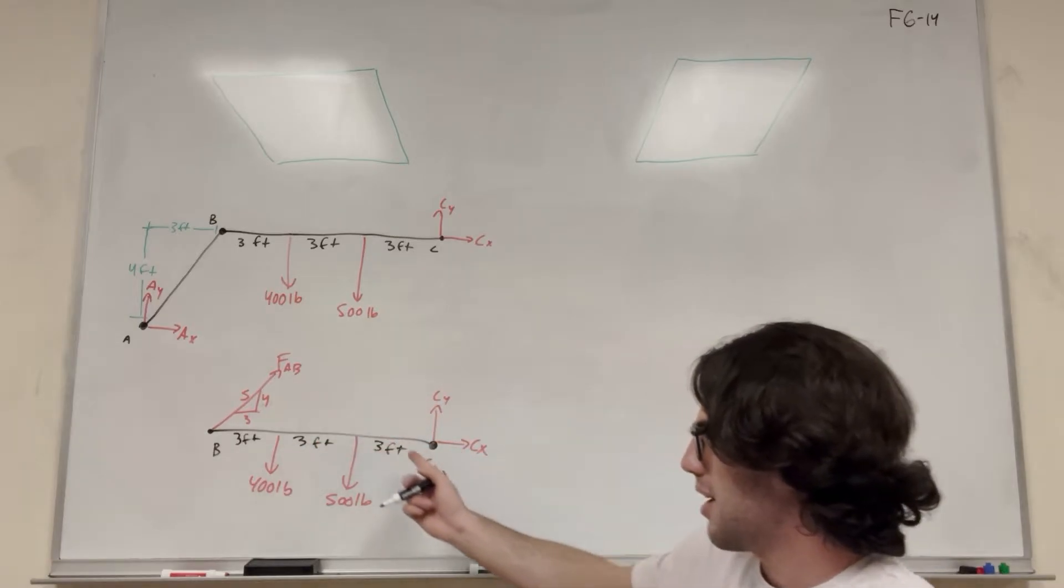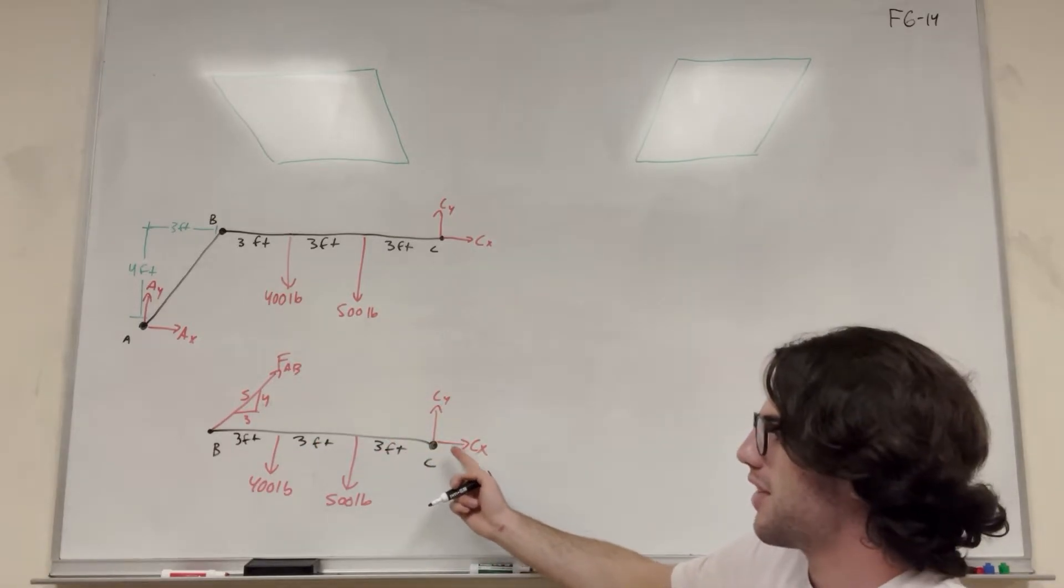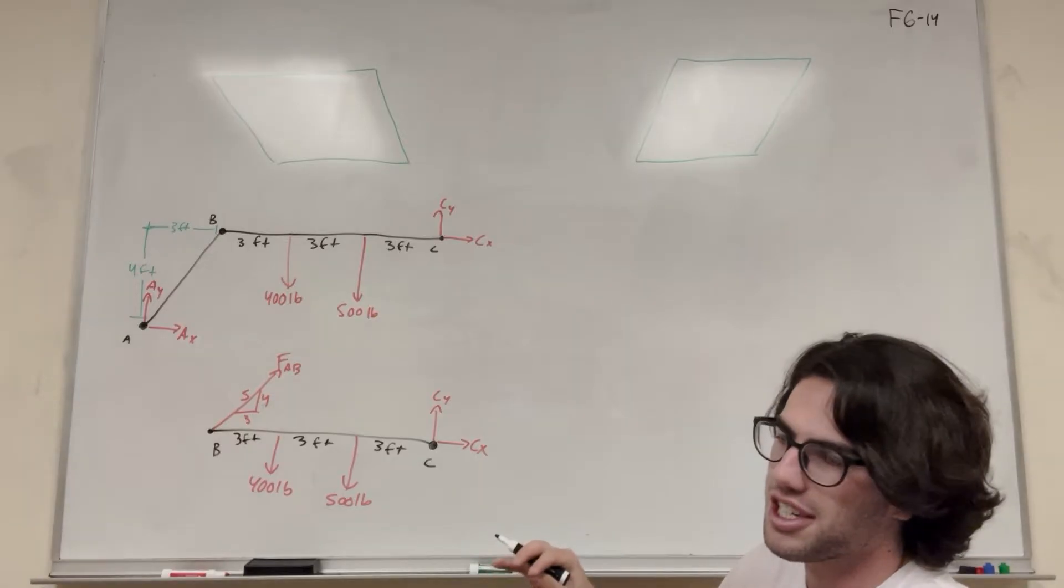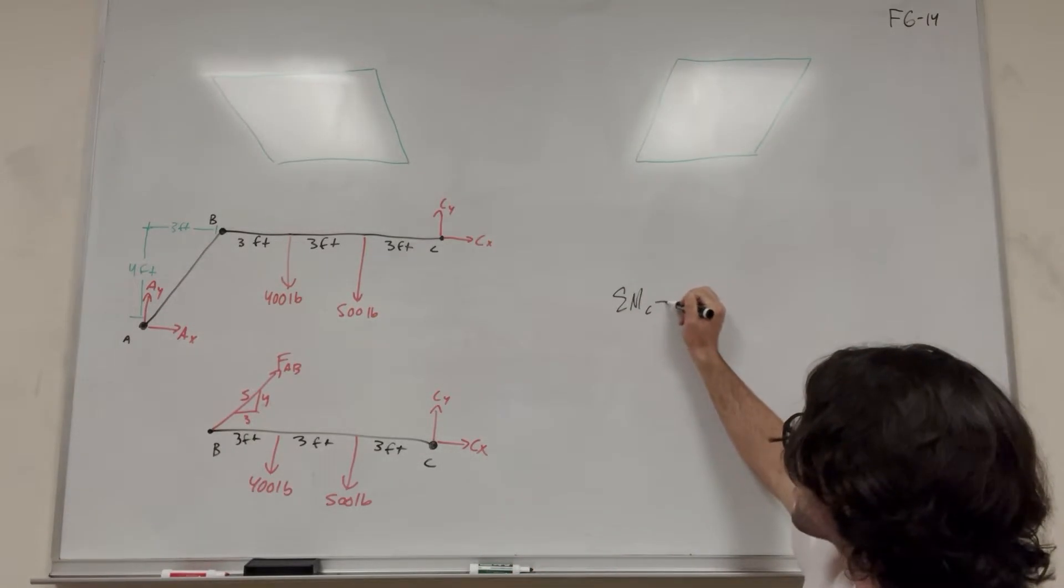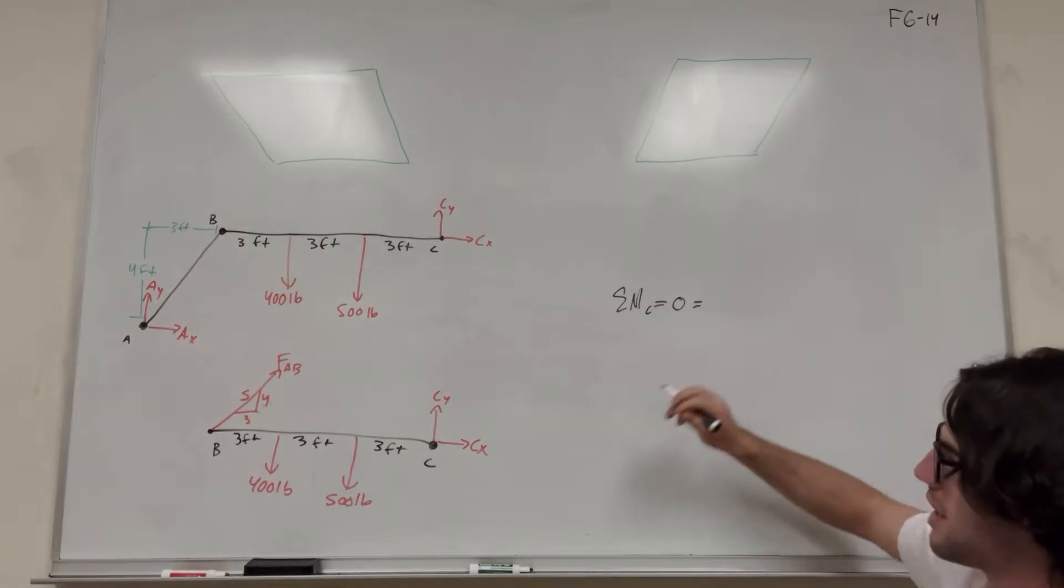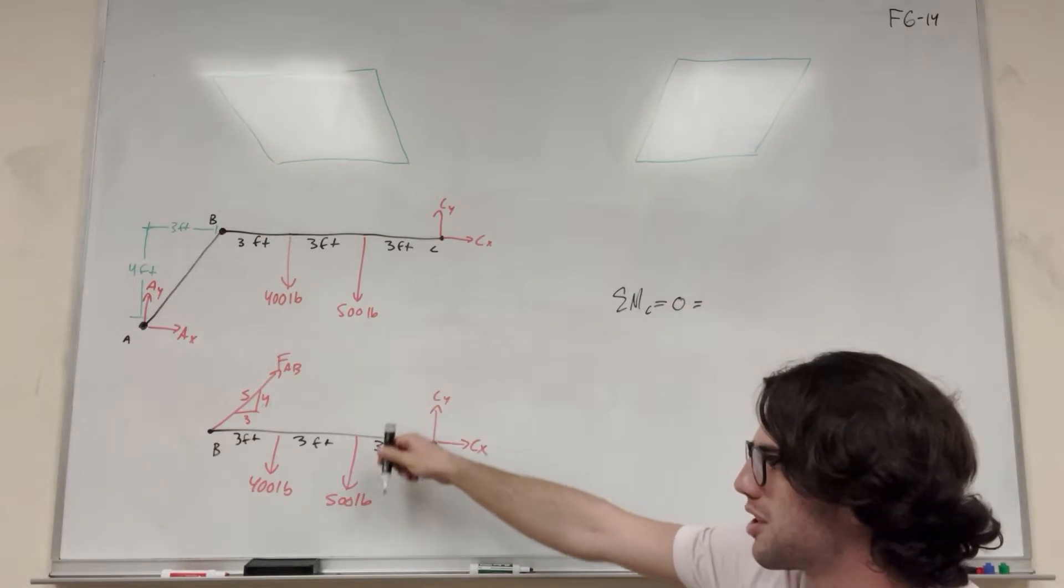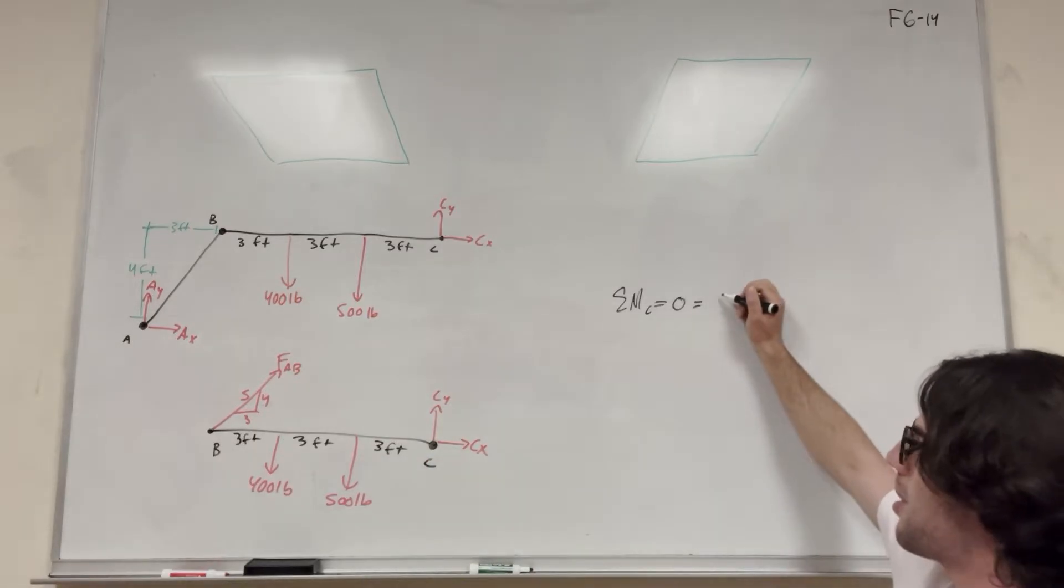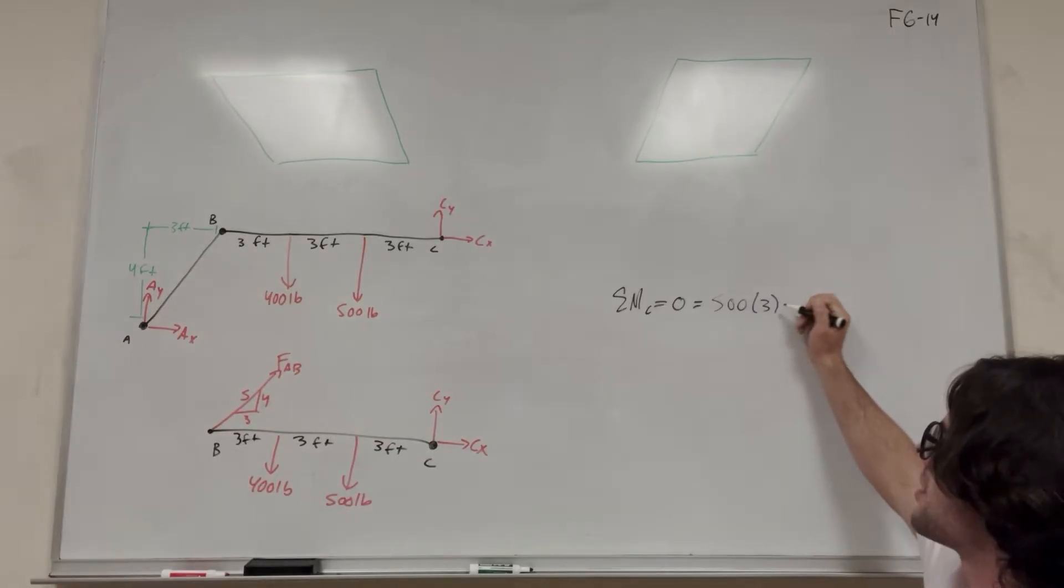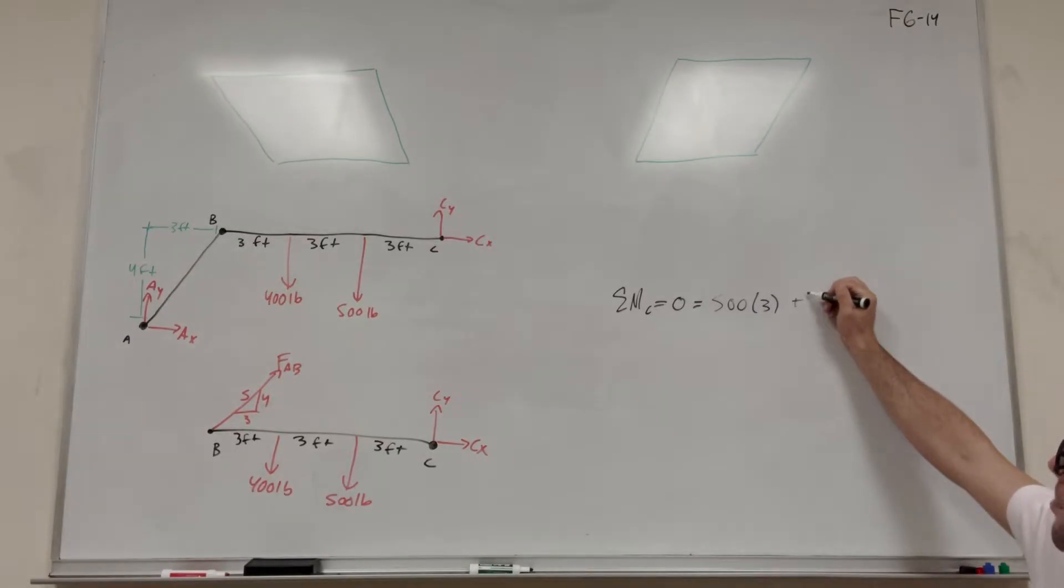So if we want to find force AB, we probably want to take the moment around C. If we take the moment around C, then C_Y and C_X are not in the equation and we can solve for it. Sum of the moments around C is equal to zero. The 500 pound force pushes downward, which is going to make this rotate counterclockwise. So it's going to be positive 500 times its distance, which is 3 feet. Same with the 400, it's going to be positive 400, and its distance is 3 plus 3 feet, 6 feet. But then force AB is making it want to go clockwise, so we're going to subtract that.